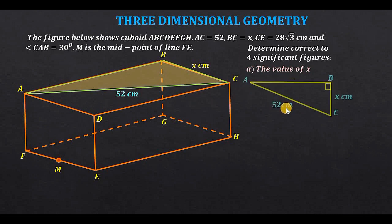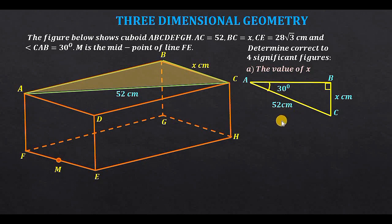Considering this triangle — if I extract it — we have triangle ABC. We are also given angle CAB, which is 30 degrees. So with this we can determine side BC, which is X. Given that this is a right-angle triangle, we can apply trigonometric ratios: sine, cosine, and tangent.